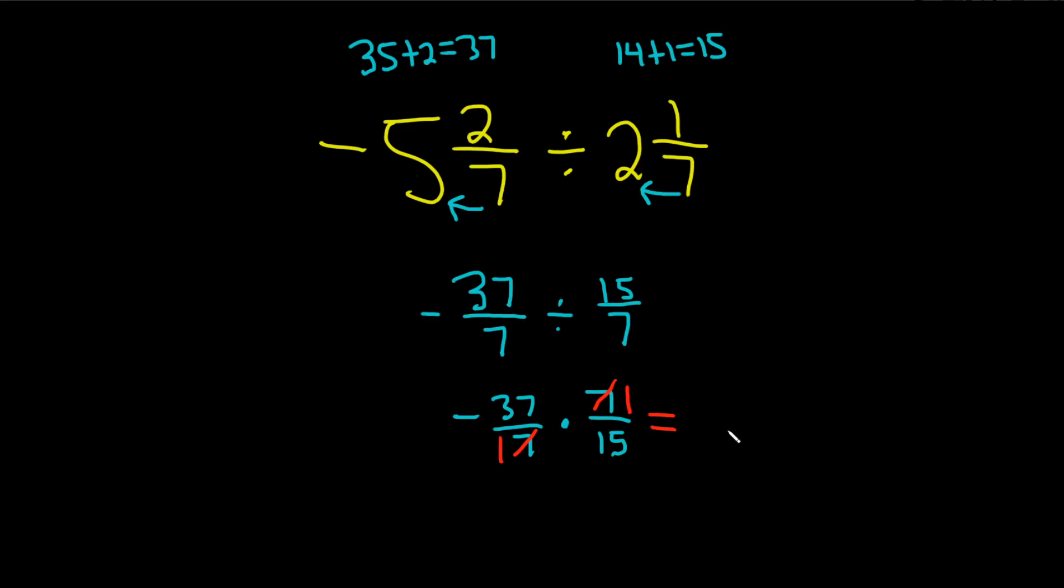So this is equal to multiply. We multiply straight across. So 37 times 1 is equal to 37. And then 1 times 15 is equal to 15. And because exactly one of them is negative, the answer is negative. And that's it.